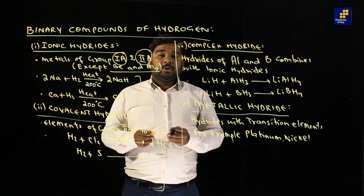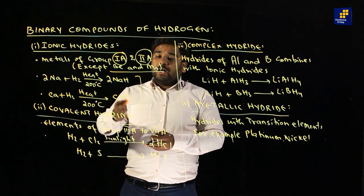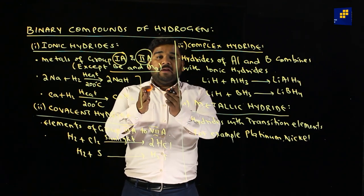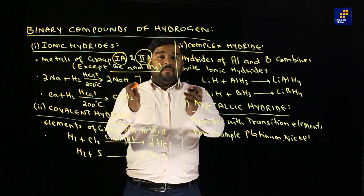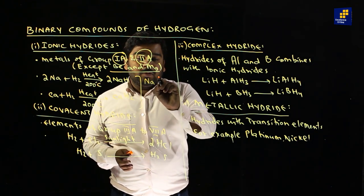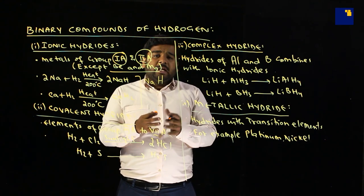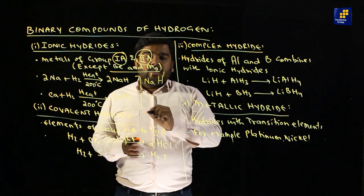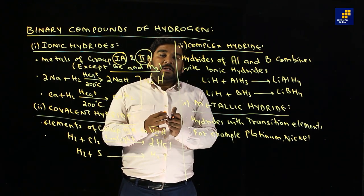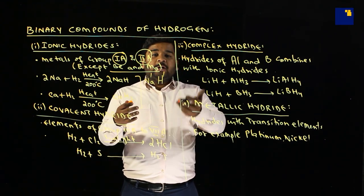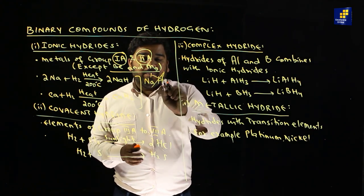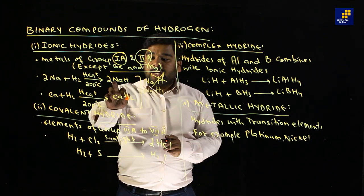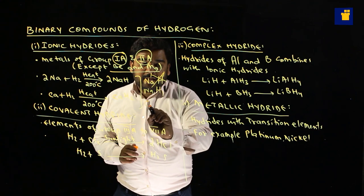For example, sodium and hydrogen combine to make NaH, and calcium and hydrogen combine to make CaH2. When we swap charges, sodium has a +1 charge and hydrogen has a -1 charge, giving the formula NaH.